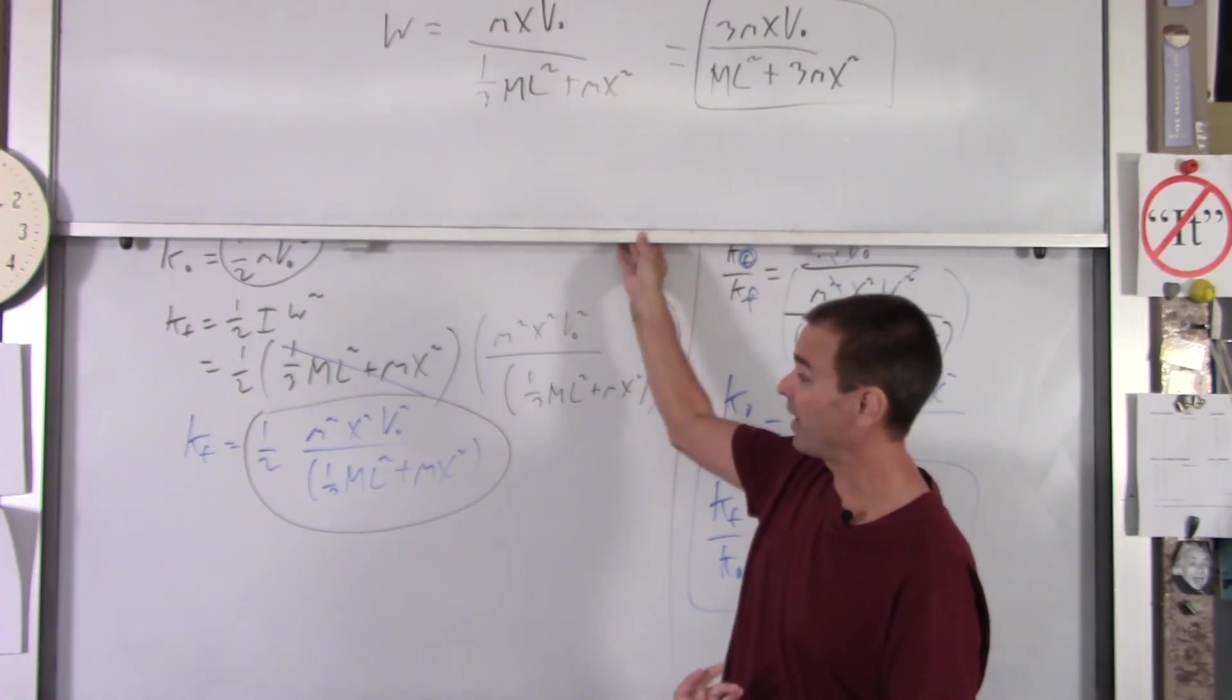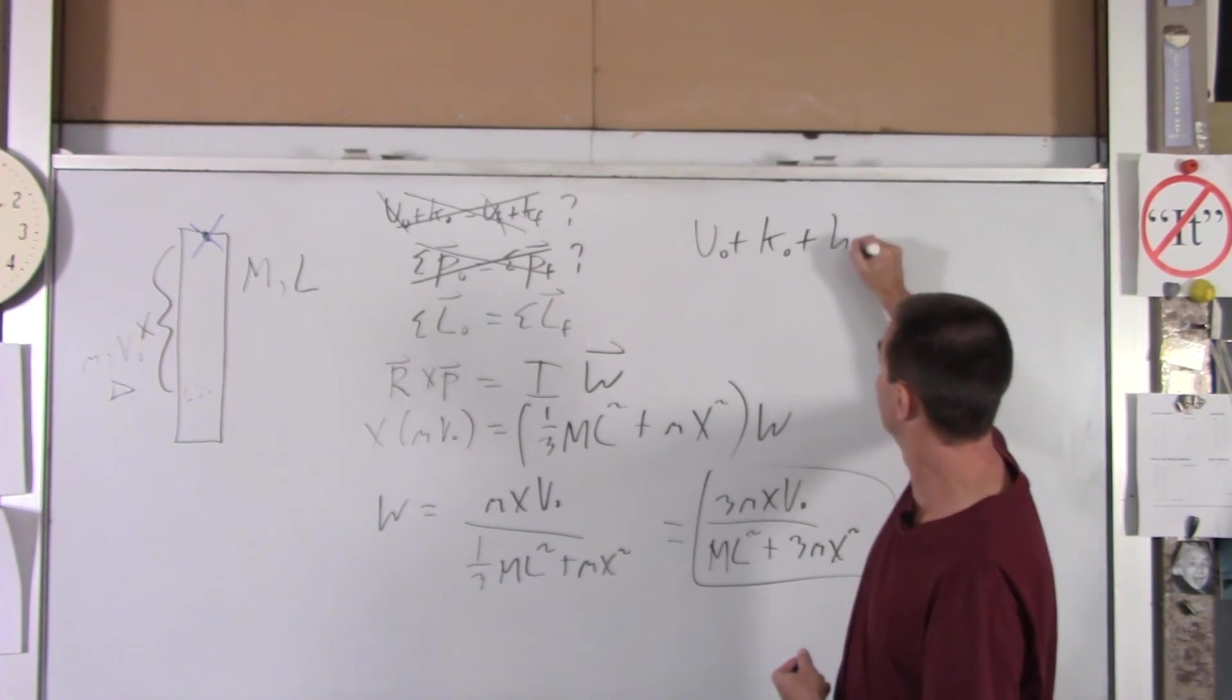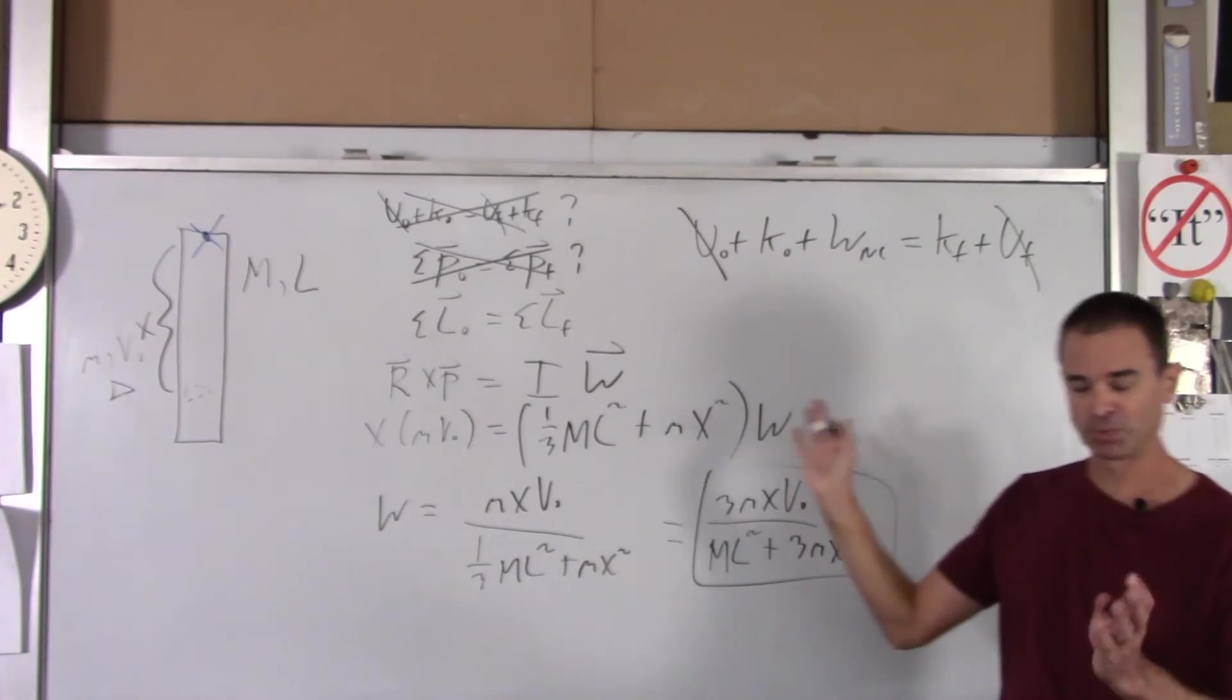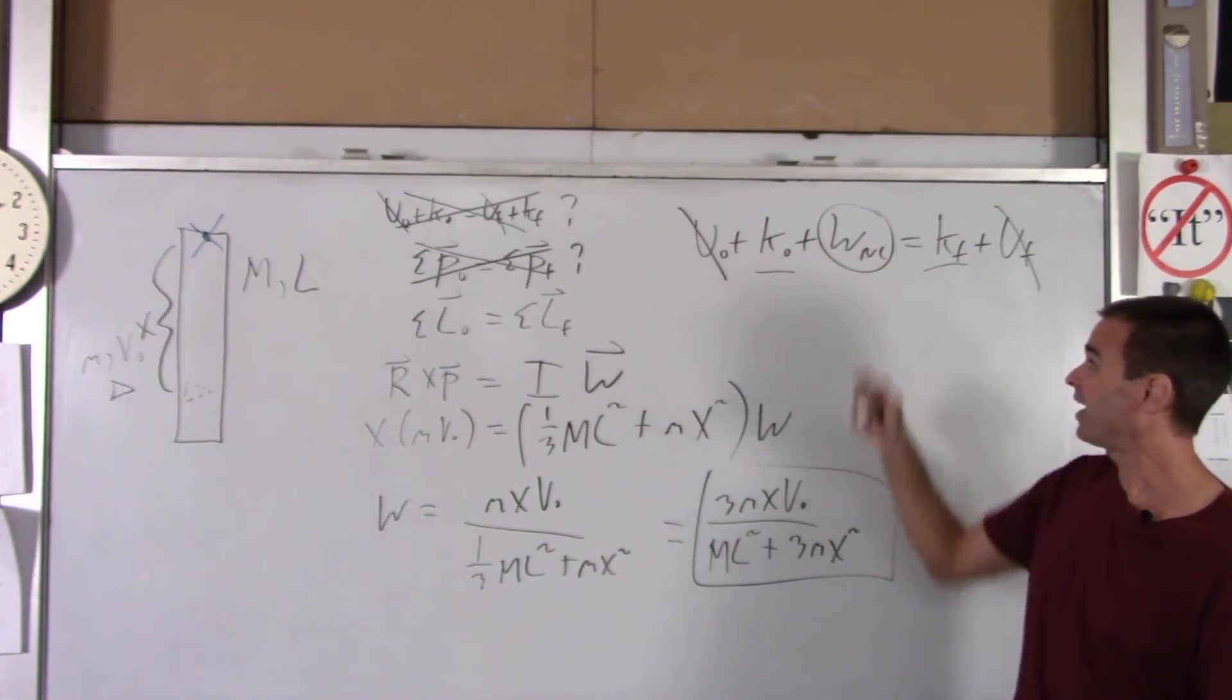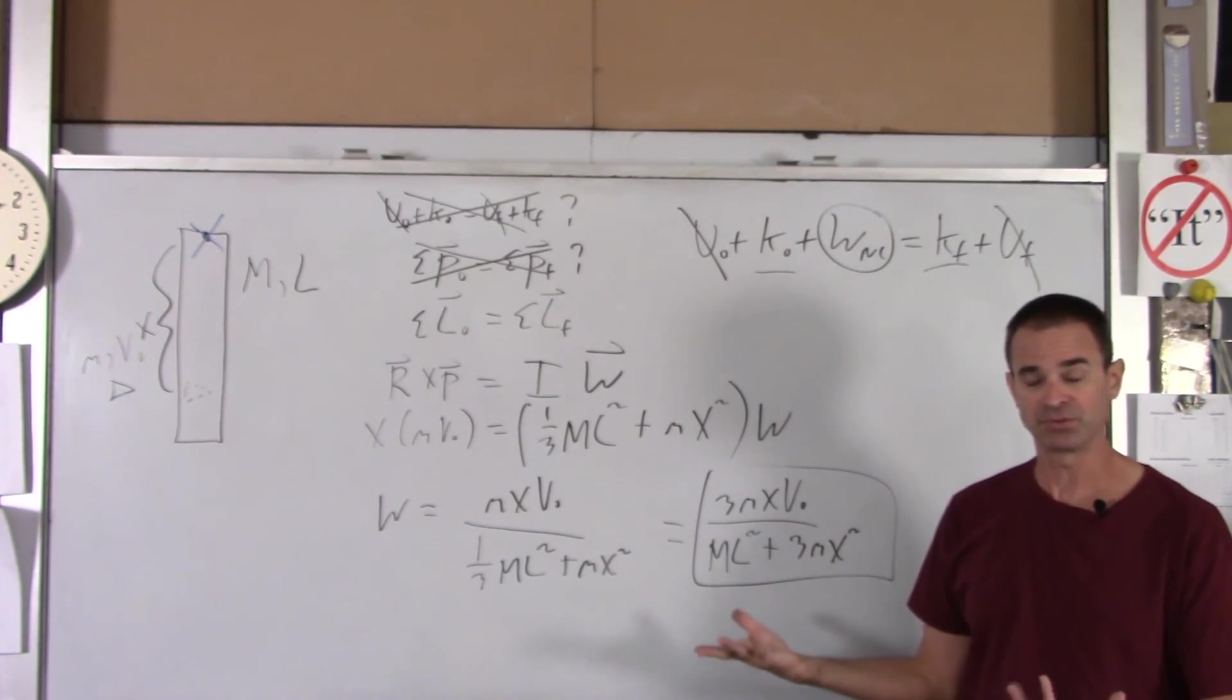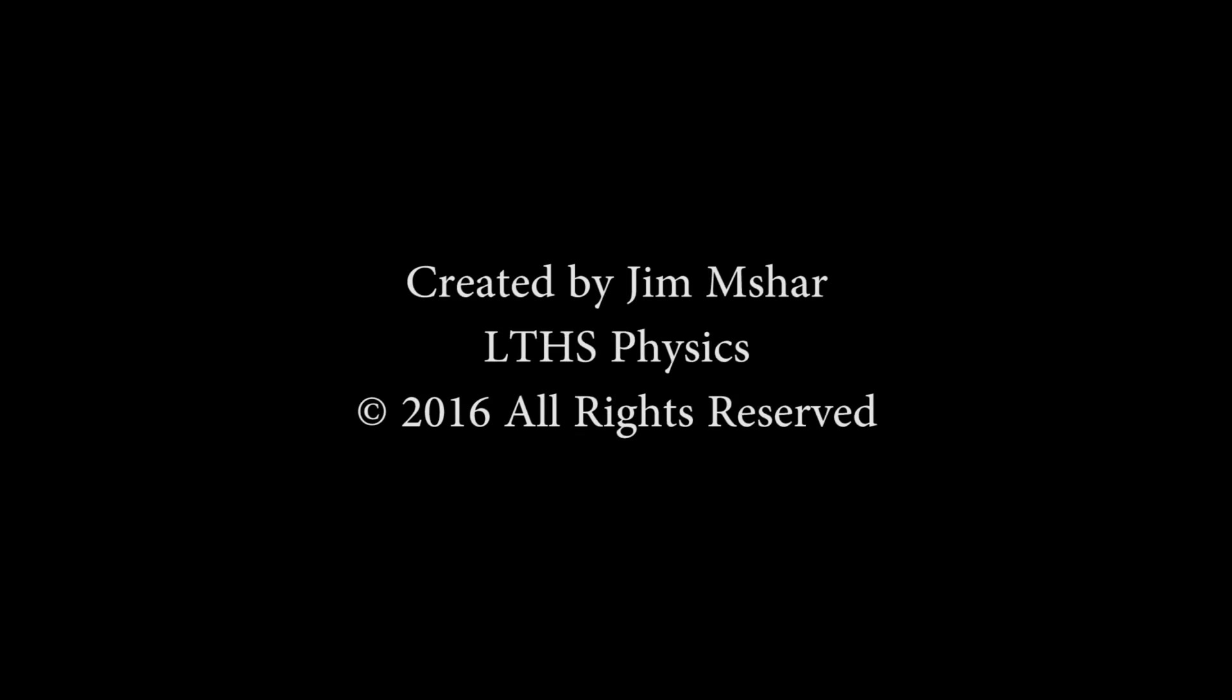And also from that, if you wanted to use conservation of energy now, knowing that the potential energy is zero before and after, you can now find this term. You can now find work non-conservative. It's just k final minus k naught. You would get a negative value, as you should, because you're losing most of your energy here. And so that would be a little more math, but you could do it pretty easily. So I hope that was helpful, and thank you very much.